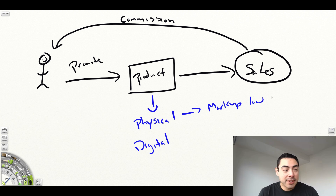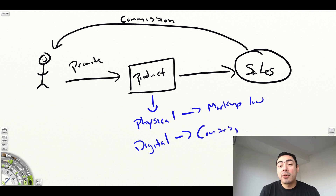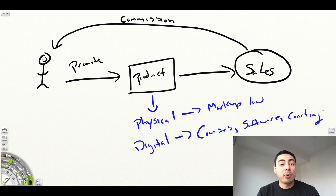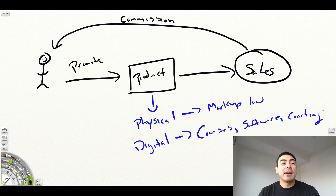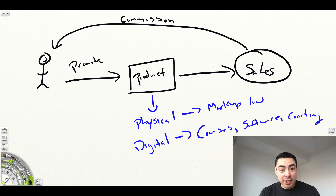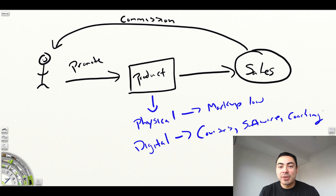Digital products are probably my favorite way to promote affiliate products. These could be things like courses, software, or coaching — all digital assets. The cool thing with digital products is there's not really any overhead compared to physical products. Once the product is created, it took the creator's time to put it together, but after that there's no overhead — it's literally sitting on someone's hard drive and they distribute it.